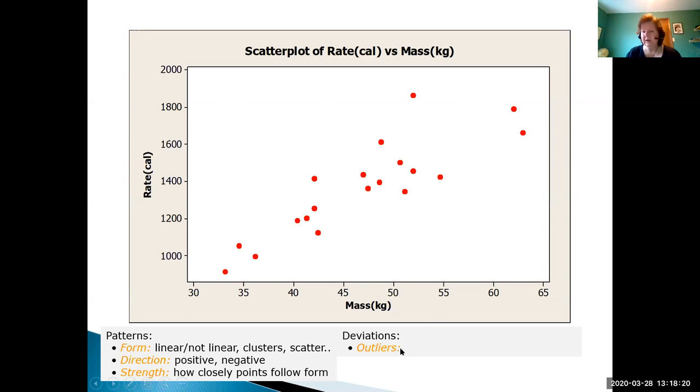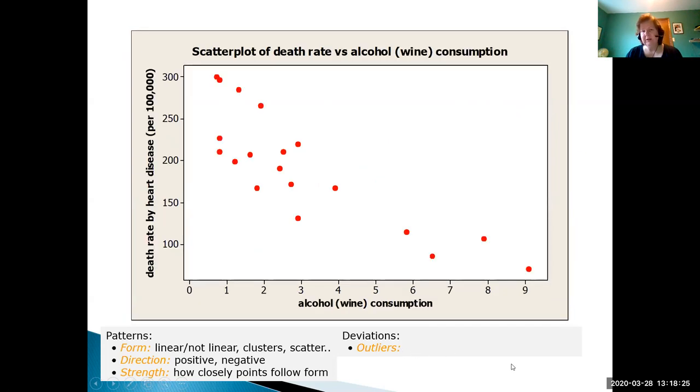Here's our death rate versus alcohol wine consumption. We can see here the form is definitely going down to the right. We have a little bit of clustering down on the low end. We have a negative relationship. If we draw a straight line, the points sort of follow fairly closely.